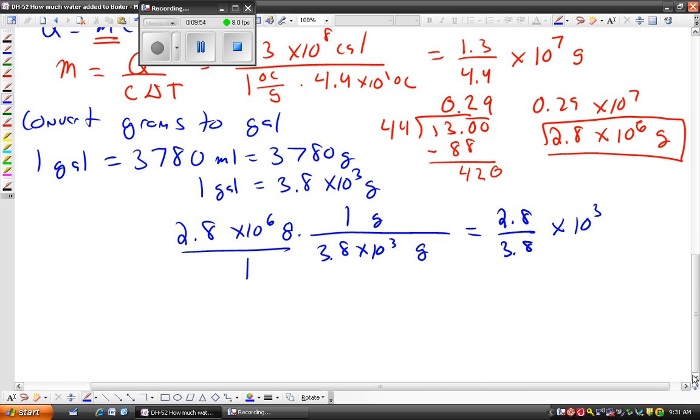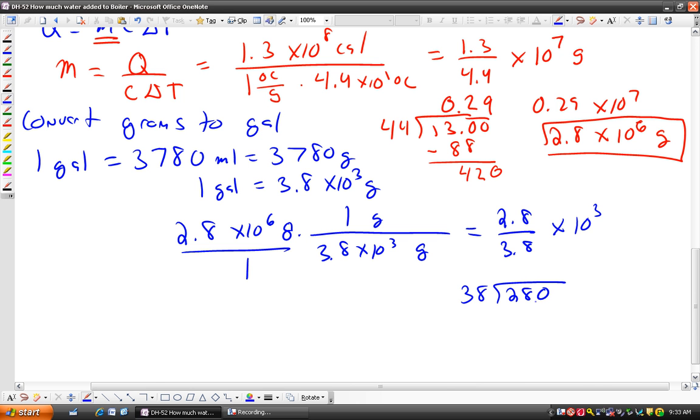Again, our little dividing trick, 2.8 divided by 3.8 is the same as 28 divided by 38 or 38 into 280. 38 does not fit into 28, but it does fit into 280. It fits in 7 times. And 7 times 38, we can actually do on the side here. You can see it's 56, 7 times 3 is 21, 26 when you add the 5. So 266 when you subtract, that gives you 14, bring down to 0.